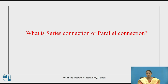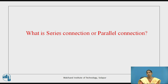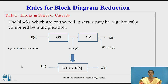Now, parallel connection: the system is parallelly connected when the blocks are connected one below the other. The same signal flows through them, but they are connected one above or one below the other. So that is rule number one — blocks in series or cascade.